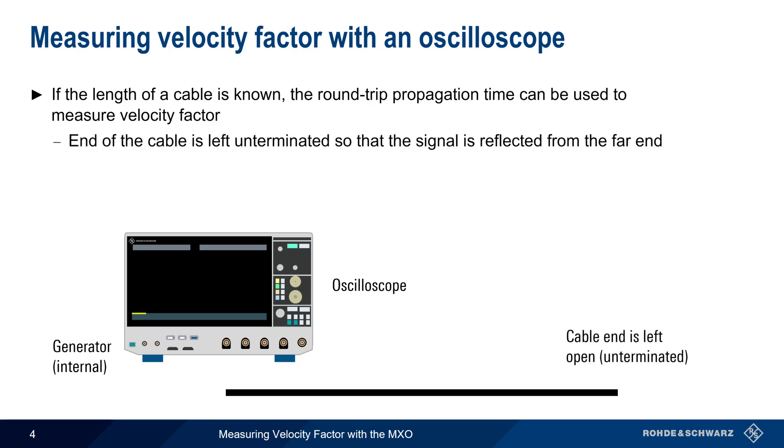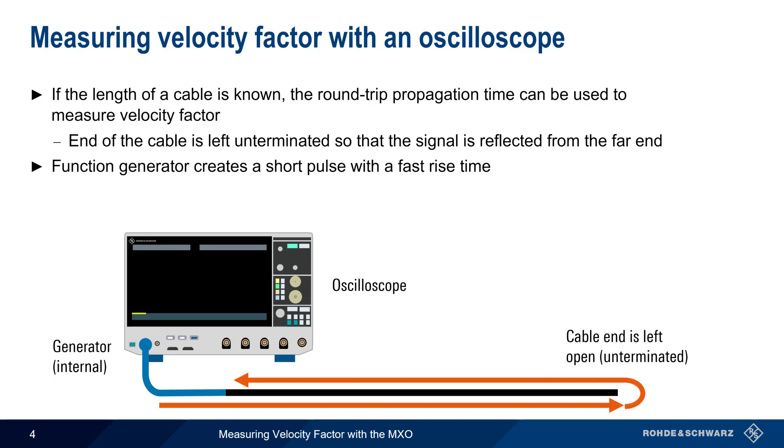The end of the cable is left unterminated, so that our stimulus signal will be reflected by the far end. We use the function generator to generate a short pulse with a very fast rise time, and an oscilloscope channel is configured to capture both the transmitted pulse and the reflected pulse. The time difference between them is then measured and used to calculate velocity factor.